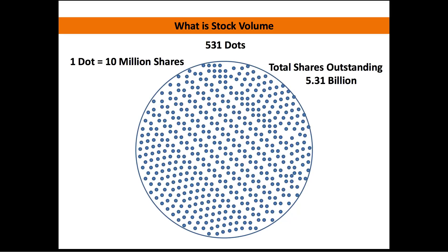What I've done with this picture is graphically represent how many shares there are of Wells Fargo. Inside of this circle, let's imagine it represents the entire company of Wells Fargo, and each one of those dots is symbolic of a share. I have 531 dots inside of this circle, so each dot represents 10 million shares — which is a lot of shares — totaling 5.3 billion shares inside that circle.